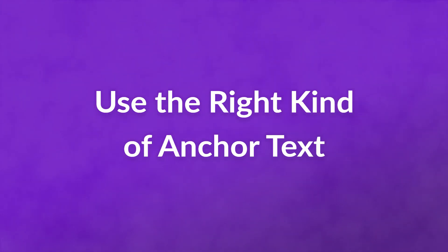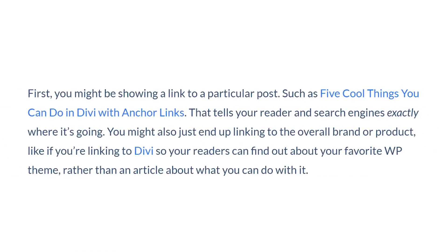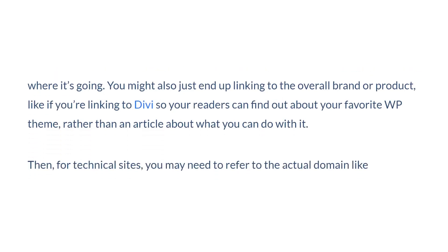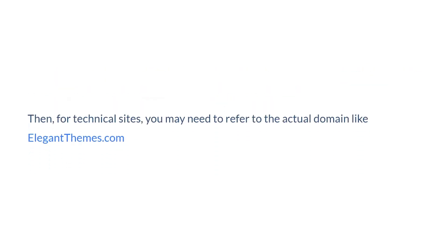Number two: use the right kind of anchor text. Not all anchor text is created equal. There are a few ways to write it out. First, you might be showing a link to a particular post, such as "five cool things you could do in Divi with anchor links." That tells your reader and search engines exactly where it's going. You might also just end up linking to the overall brand or product, like if you're linking to Divi, so your readers can find out about your favorite WordPress theme. Then for technical sites, you may need to refer to the actual domain with anchor text, like elegantthemes.com.